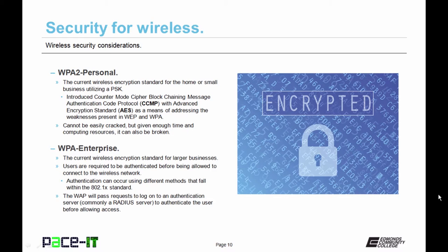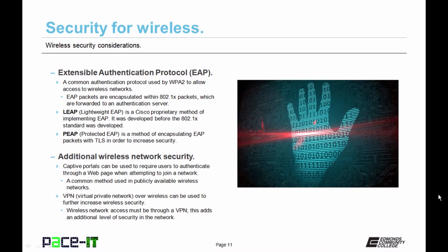If you have the resources, you might want to implement WPA Enterprise, which is the current wireless encryption standard for larger businesses. Users are required to be authenticated before being allowed to connect to the wireless network, and authentication can occur using different methods that fall within the 802.1x standard. The wireless access point passes logon requests to an authentication server — commonly a RADIUS server — to authenticate the user before allowing access to the wireless network.